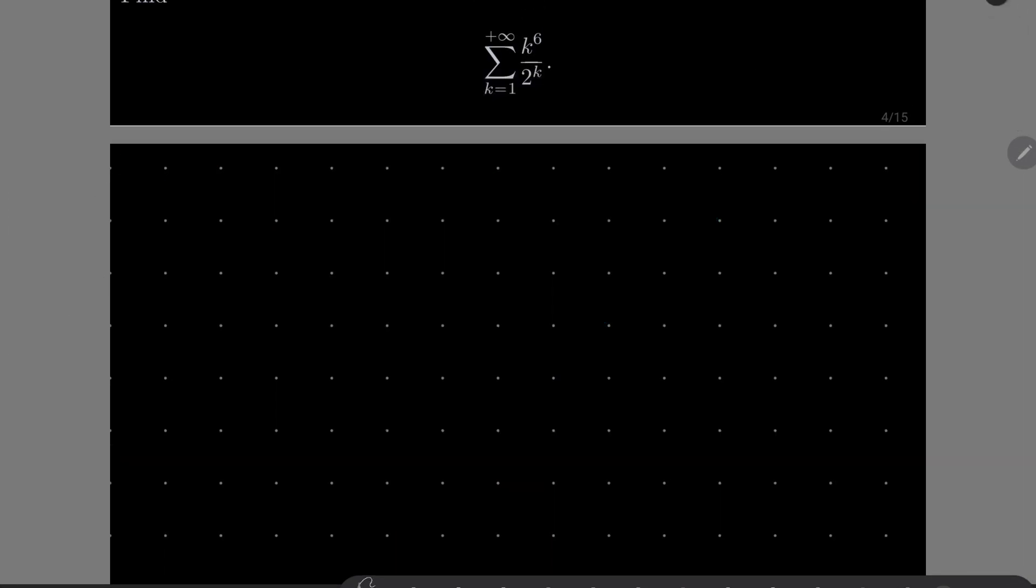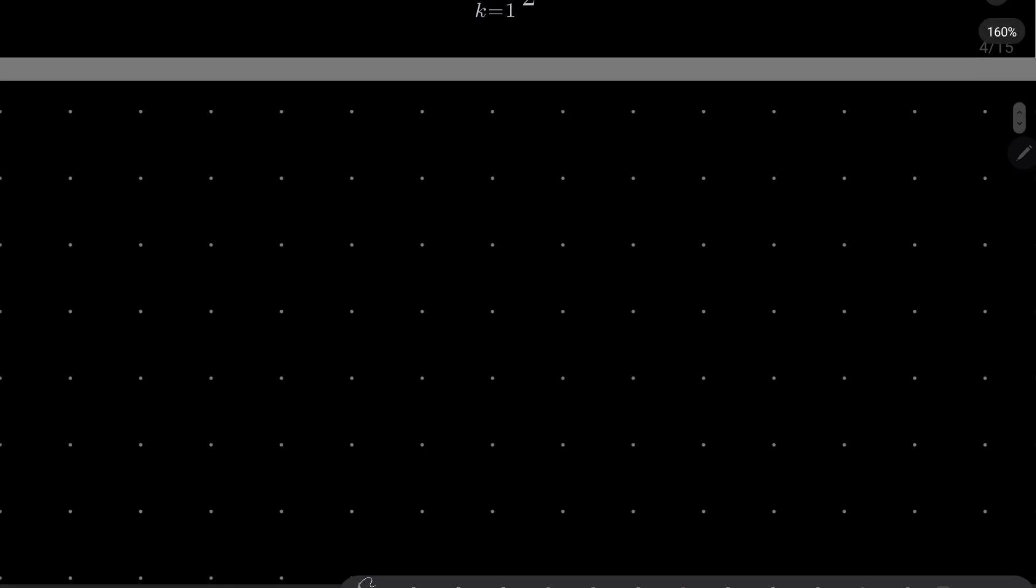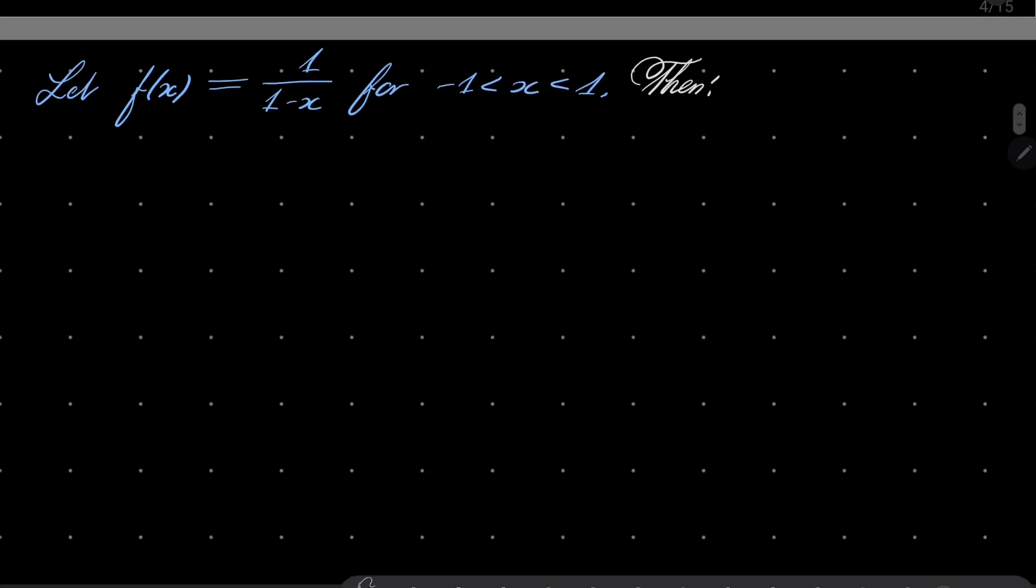All right, so what's the motivation behind it? So let f of x be equal to 1 over 1 minus x for x between minus 1 and 1. Notice that then we have the following: f of x can be expressed as series from 0 to infinity of x to the power of k.